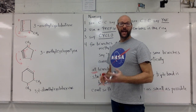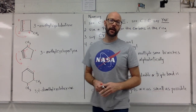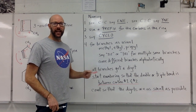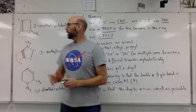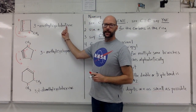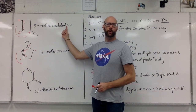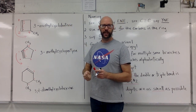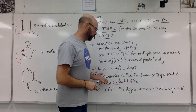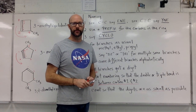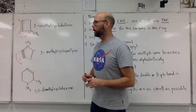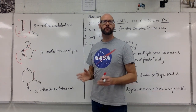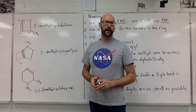The big thing to remember is that carbon number one and two is always the location of the double or triple bond — by leaving out that locant digit, it's built into the process that the double or triple bond is between those first two carbons. Then we have the option to count clockwise or counterclockwise so that the digits we assign to branches are as small as possible. I hope that helps.